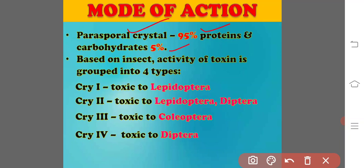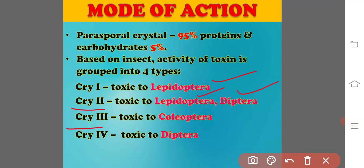The parasporal crystal comprises approximately 95% protein and 5% carbohydrates, and is an aggregate of protein that can be dissociated by mild alkali treatment into subunits. The insecticidal toxins from several thousand Bacillus thuringiensis strains have been isolated and characterized based on insecticidal activity. The CRY genes are grouped into four major classes: CRY-1 (toxic to Lepidoptera), CRY-2 (toxic to Lepidoptera and Diptera), CRY-3 (toxic to Coleoptera), and CRY-4 (toxic to Diptera).